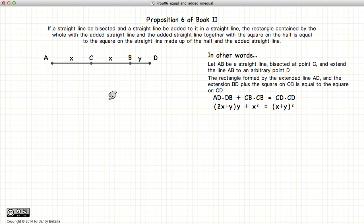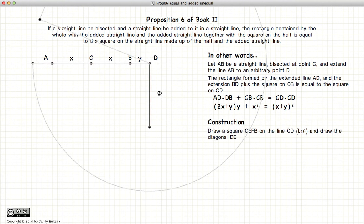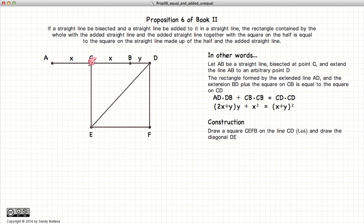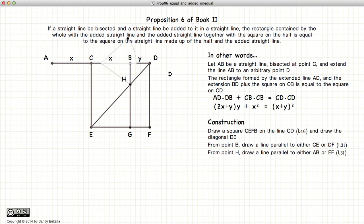So the first thing we're going to do is to draw a square on CD, draw a line through B parallel to CE, draw a line through H parallel to CD, and finally draw a line through A parallel to CL.